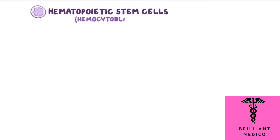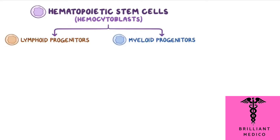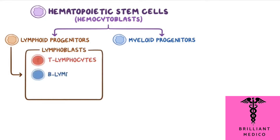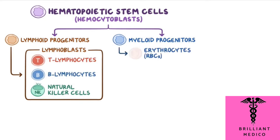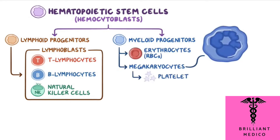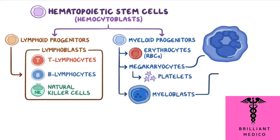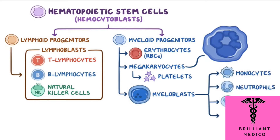Hematopoietic stem cells, also called hemocytoblasts, can become lymphoid progenitors or myeloid progenitors. The lymphoid progenitors can develop into lymphoblasts, which can then differentiate into some white blood cells like T-lymphocytes, B-lymphocytes, and natural killer cells. The myeloid progenitors can differentiate into erythrocytes, or red blood cells, megakaryocytes, which eventually give rise to platelets, or myeloblasts, which can then become other white blood cells like monocytes, neutrophils, basophils, and eosinophils.